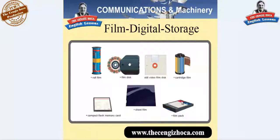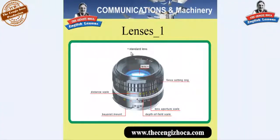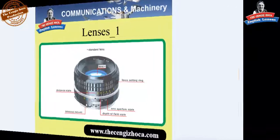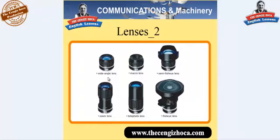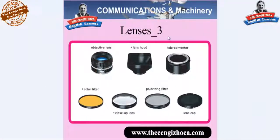Lenses one — standard lens: the lens, the focus setting ring, the distance scale, the lens aperture scale, depth of field scale, and bayonet mount. Lenses two: wide angle lens, macro lens, semi-fisheye lens, zoom lens, telephoto lens, fisheye lens. Lenses three: objective lens, lens hood, teleconverter.